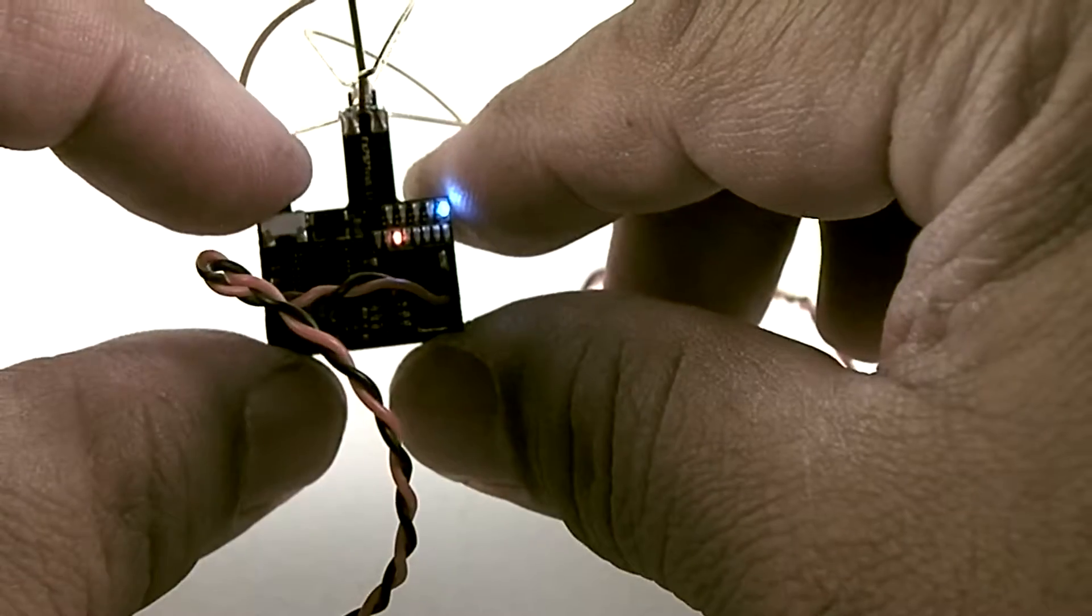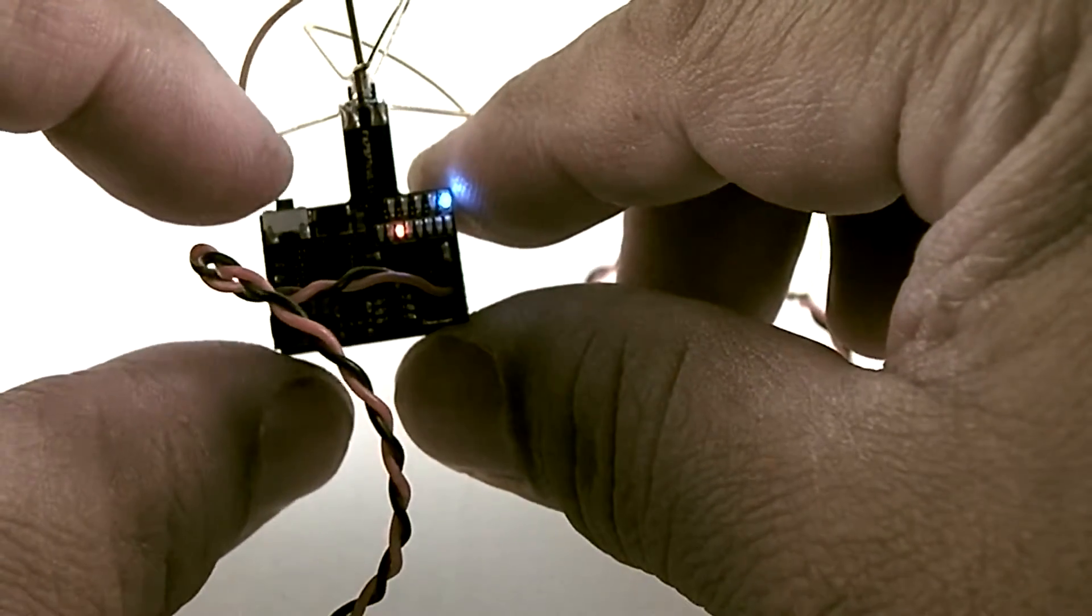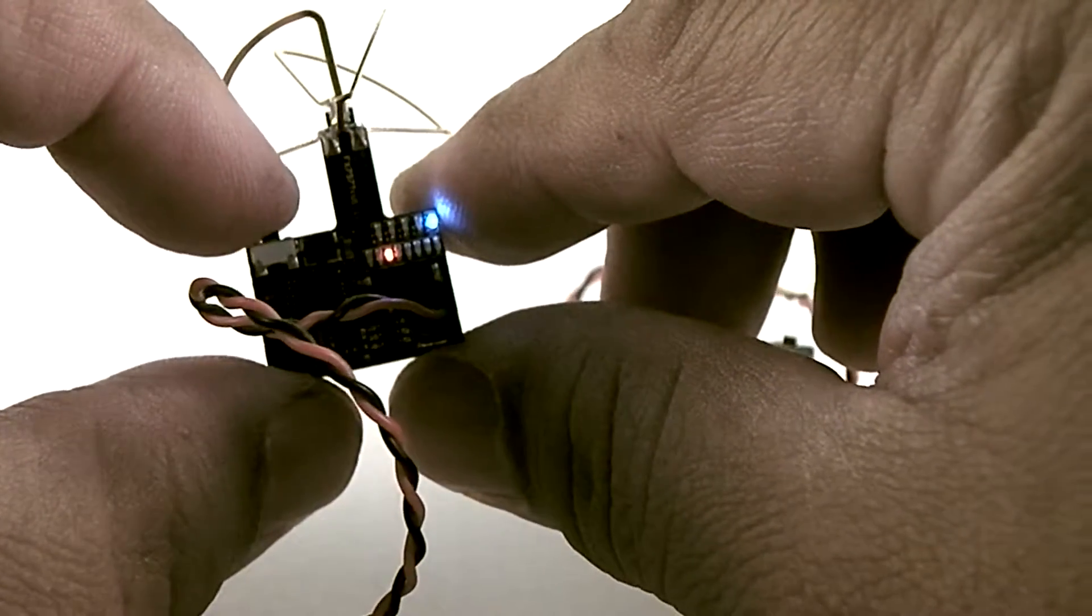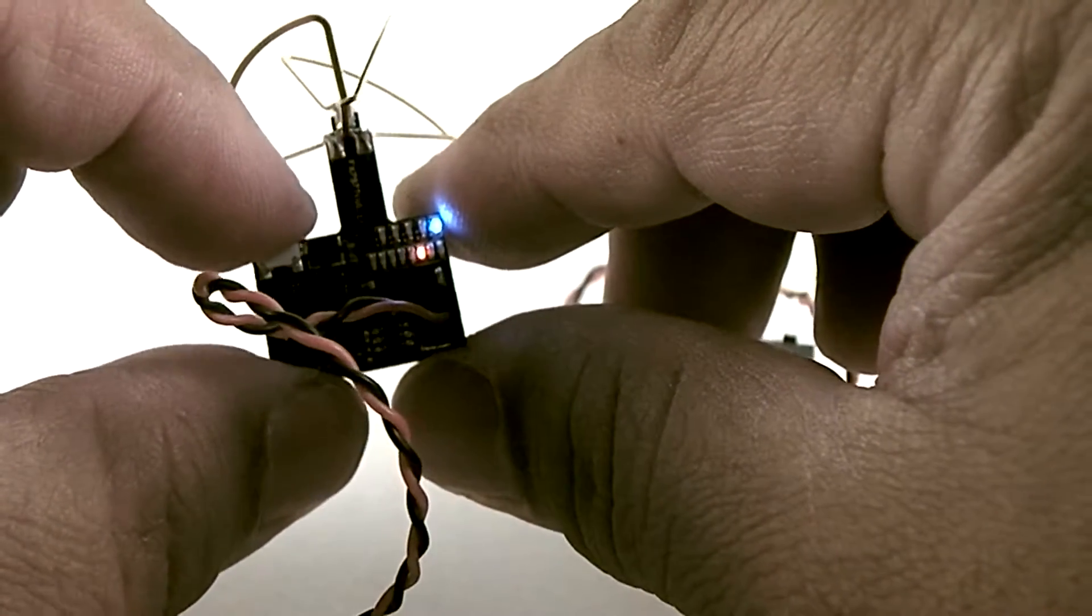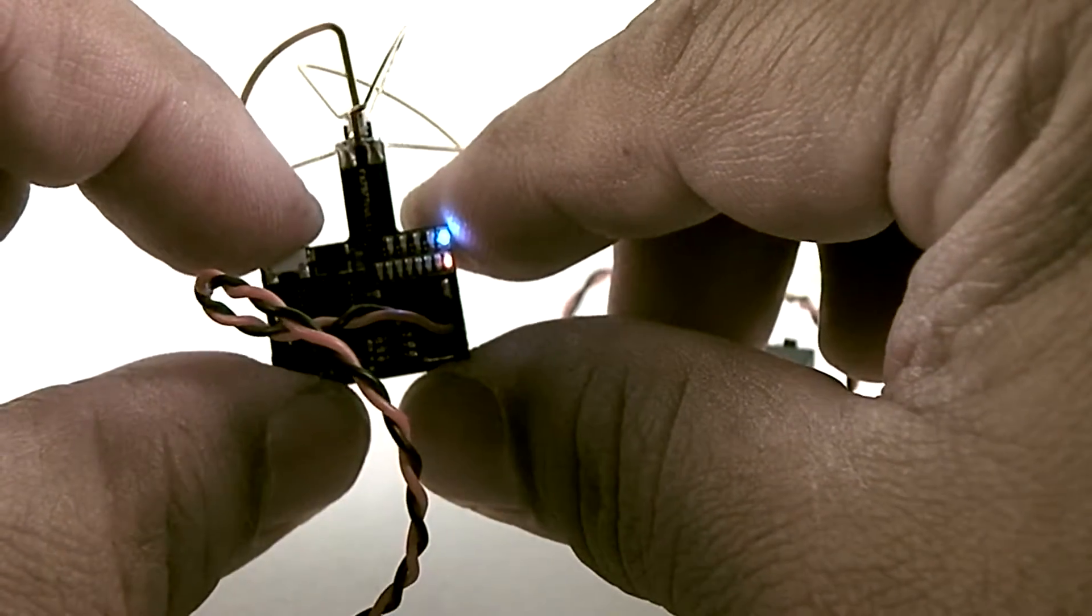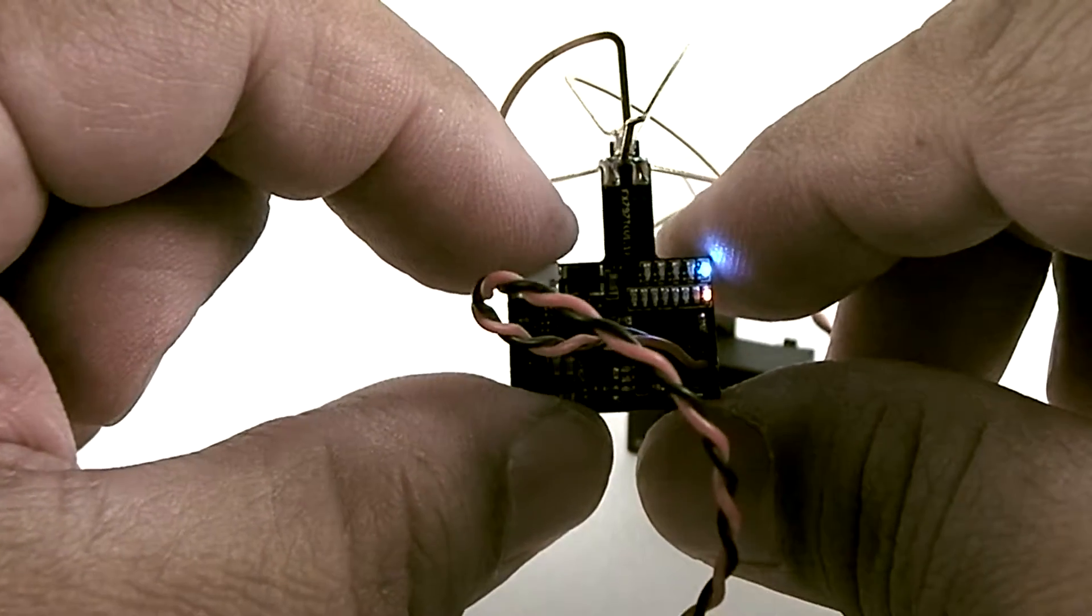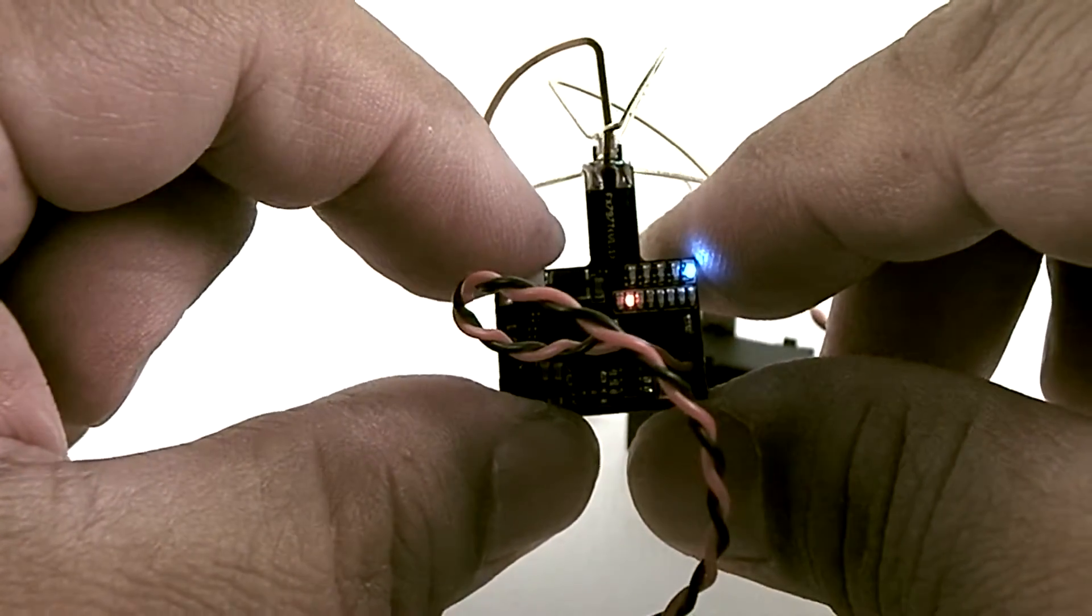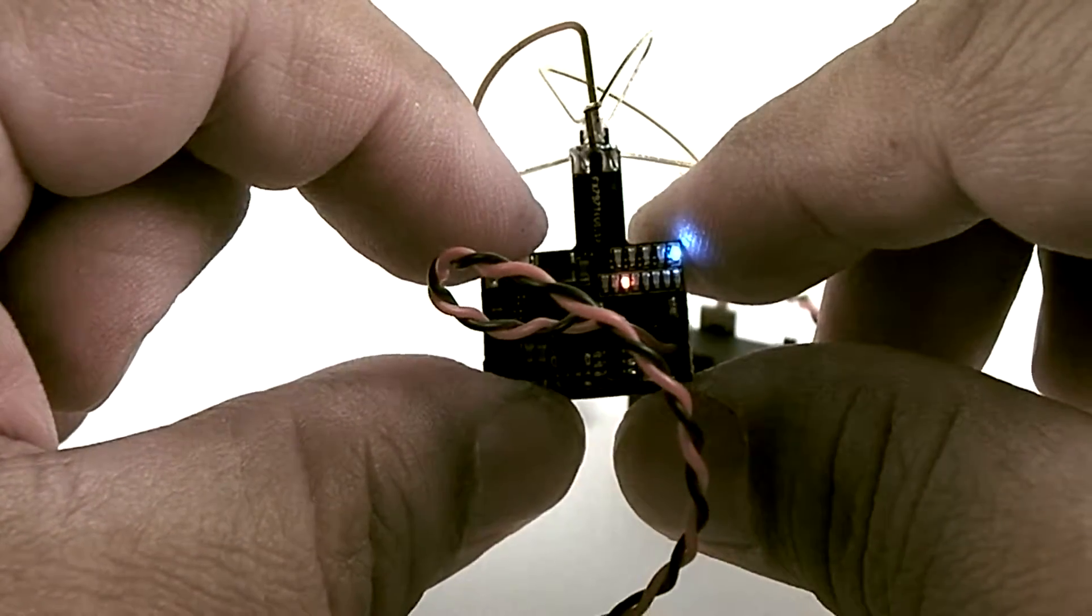This little button, it's a momentary switch, a button used for changing channels and changing bands. So a single press will cycle between one of eight channels. You can see the LED changing, denoting which channel it's on. And a long press will change the band.